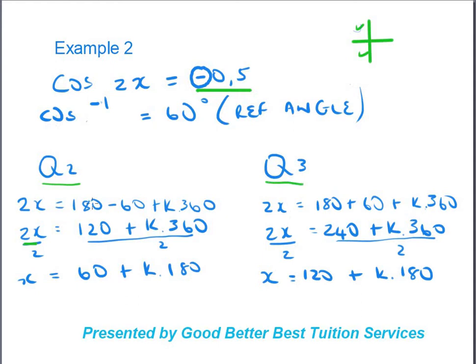To recap: for cos(2x) = −0.5, work out your reference angle, then check where cosine is positive or negative on the cosine diagram. That determines your quadrants. The sign of the value — in this case negative — is your determinant for choosing which quadrants to use.